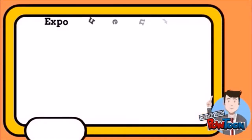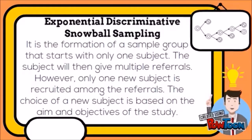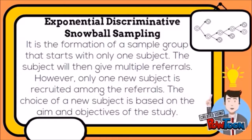And lastly, Exponential Discriminative Snowball Sampling. It is the formation of a sample group that starts with only one subject. The subject will then give multiple referrals; however, only one new subject is recruited among the referrals. The choice of new subject is based on the aim and objective of the study.